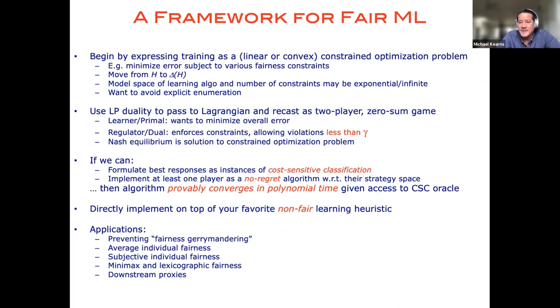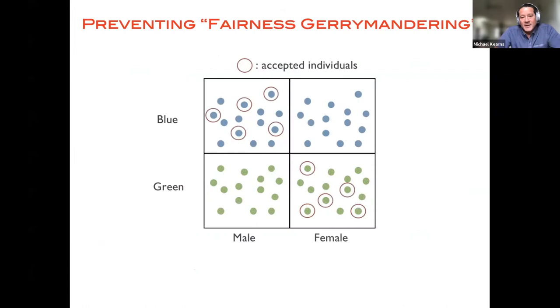So what I want to do now is just quickly give you a whirlwind tour of a few different applications of exactly this agenda, and I'm not going to get into the weeds on exactly how you do each of these steps, but that's the basic work: for each of these different types of fairness definitions that I'm going to give now, figuring out how to pull off this agenda, how to instantiate best response as cost-sensitive classification, figuring out which of the two players you can make into a no-regret algorithm, etc.